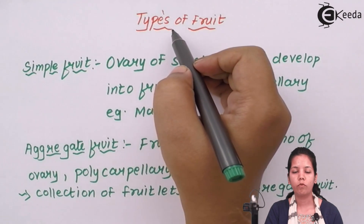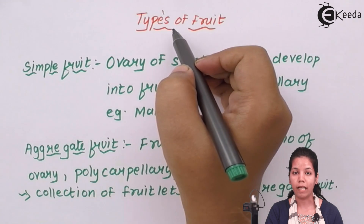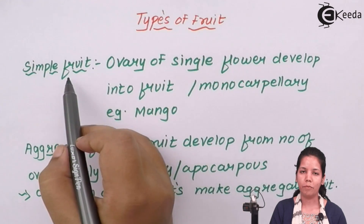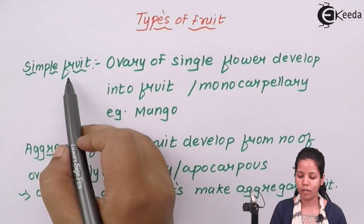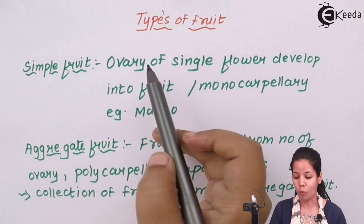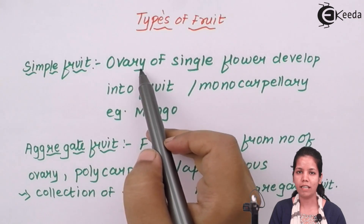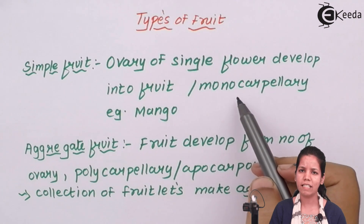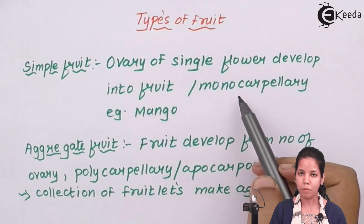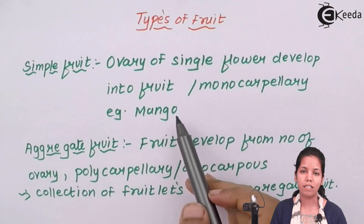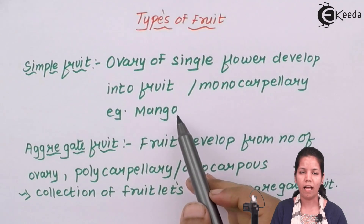In types of fruit, simple fruit is the first type. Inside simple fruit, fertilization takes place inside one flower — a single ovary — which is termed as monocarpillary, meaning a single gynoecium or single female gametophyte. An example of simple fruit is mango, which contains just one seed. So simple fruits basically have one seed.